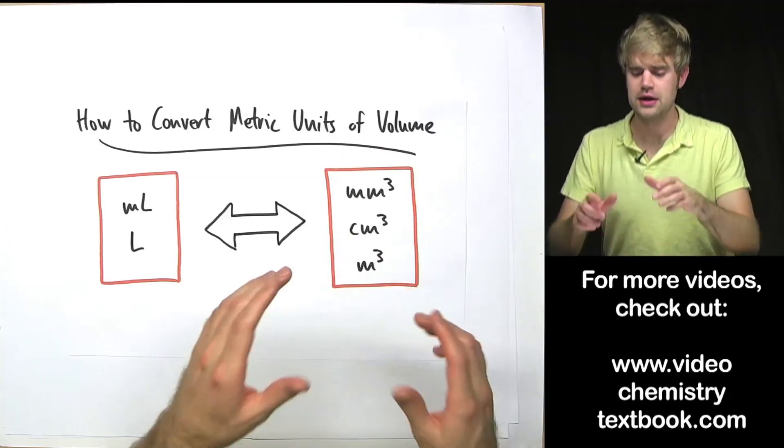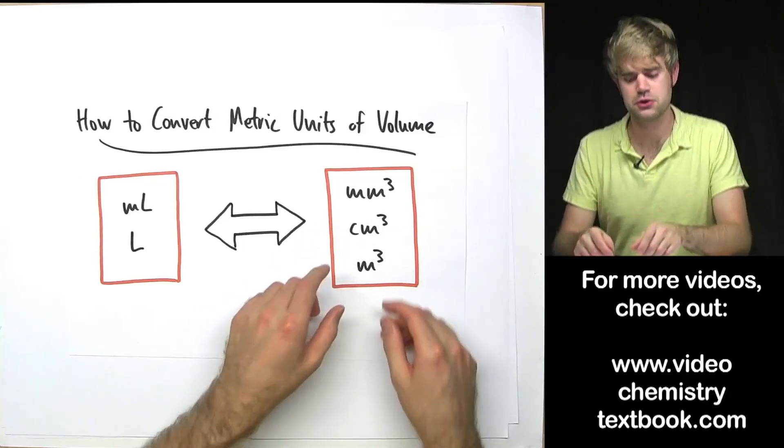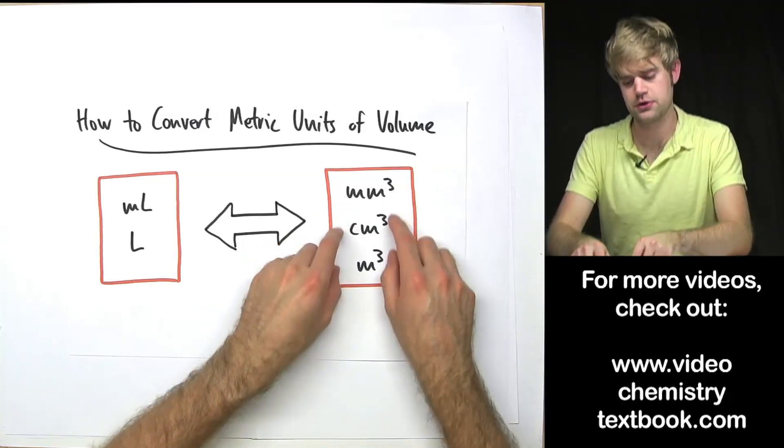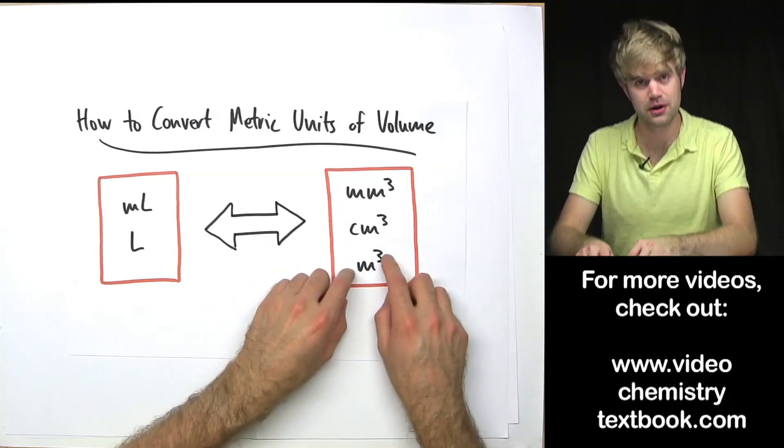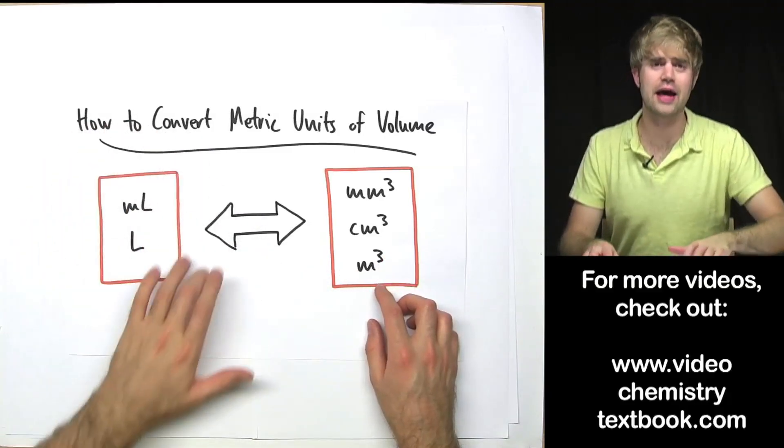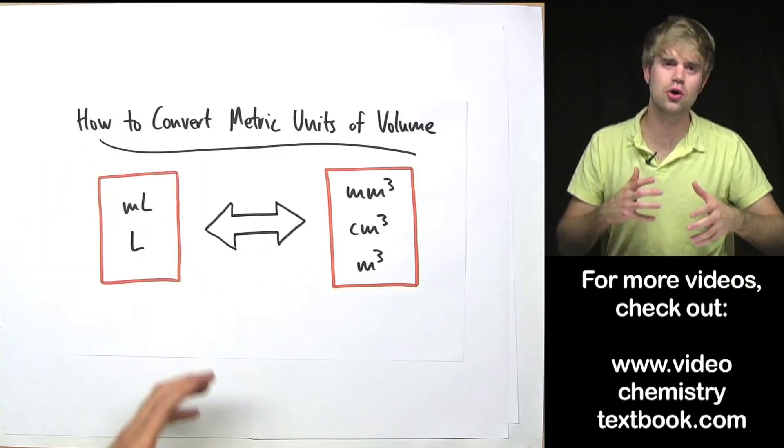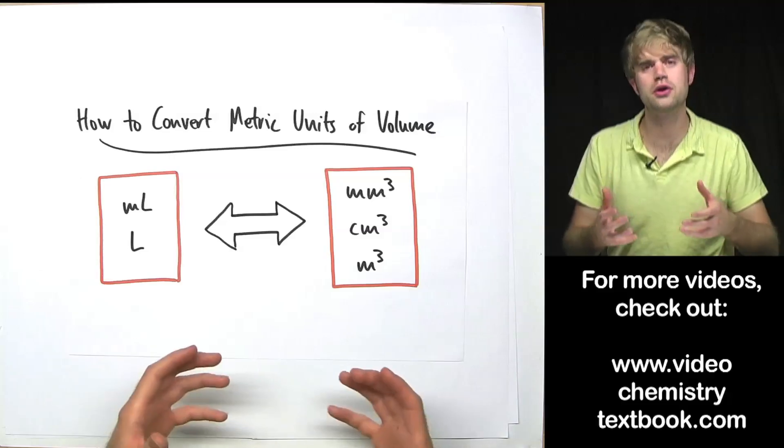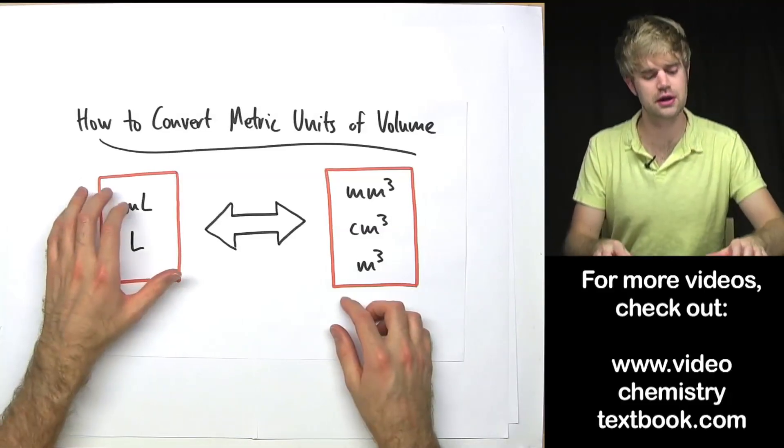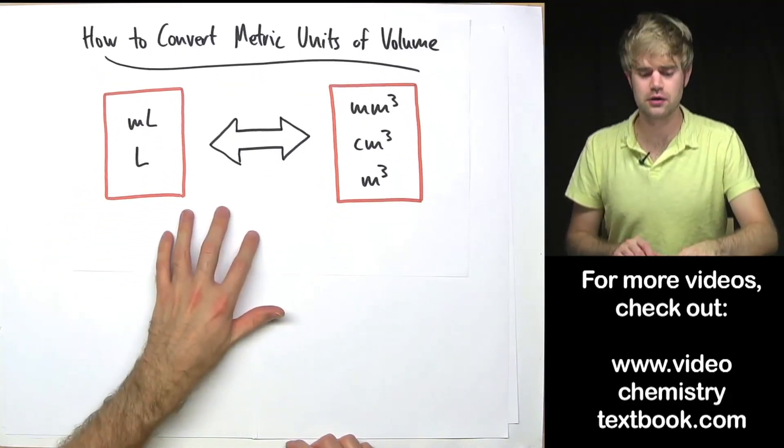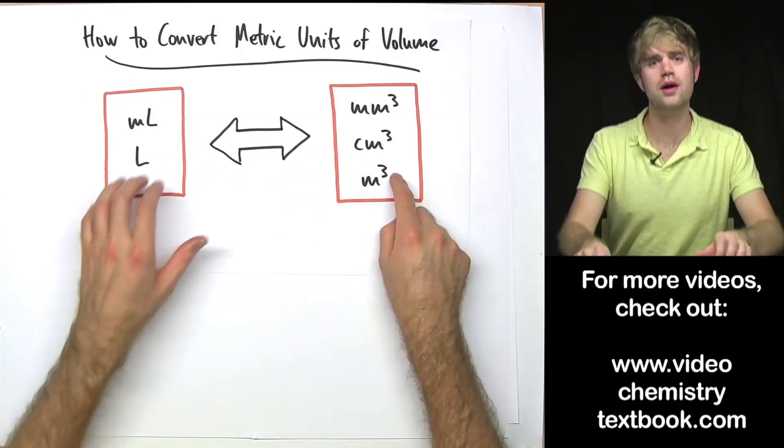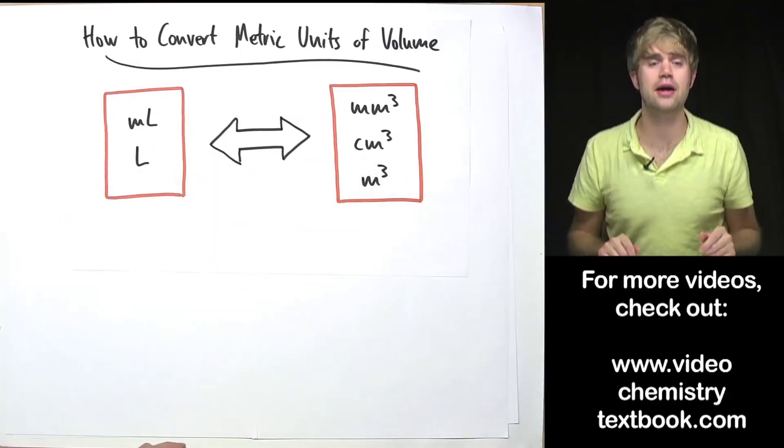One of these categories is based on units of length. So we have things like cubic millimeters, cubic centimeters, and cubic meters. The other category contains units that you're probably most used to dealing with when we're talking about liquids, so things like milliliters and liters. Luckily, there are some very straightforward ways to convert between these two categories.